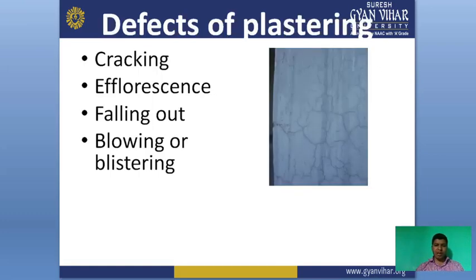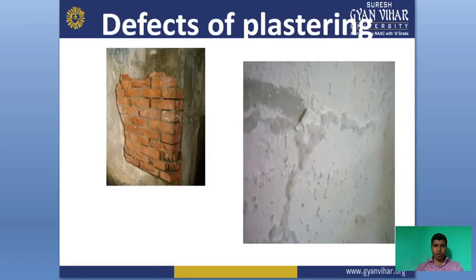Common defects of plastering are: cracking, efflorescence, falling out, and blowing or blistering. Cracking occurs if high grade cement is used. Efflorescence occurs if more cement or more sand is used without proper setting. Falling out occurs if proper curing is not given. This figure shows defects of plastering including efflorescence, blowing, cracking, and falling out.